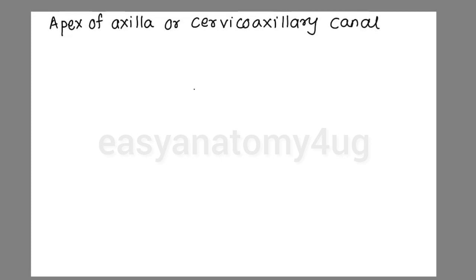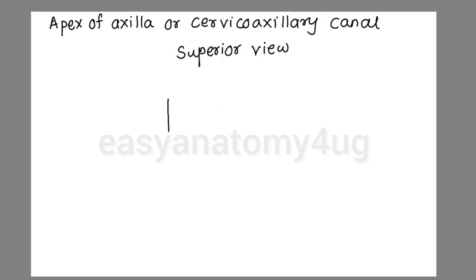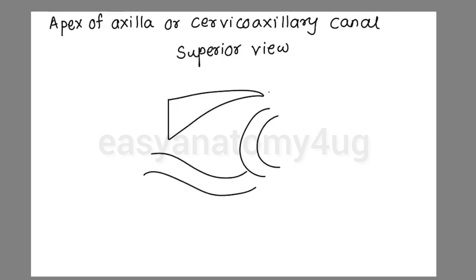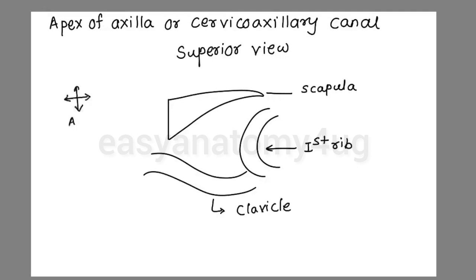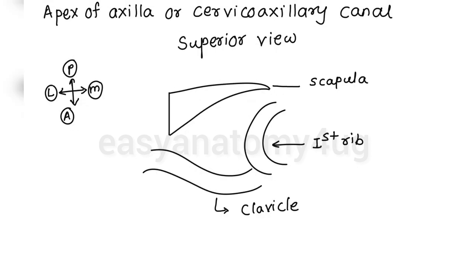Next, the apex of the axilla, which is also called as cervico-axillary canal. In the superior view, we will first draw scapula, then we will show the first rib, and anteriorly there is clavicle. So these are the boundaries of the cervico-axillary canal or apex of axilla. We should not forget to show the directions.